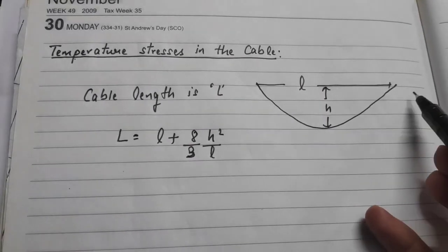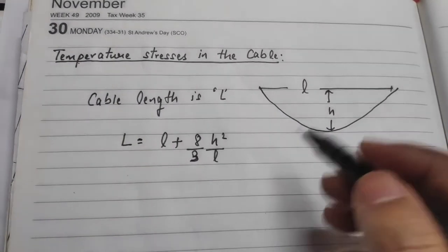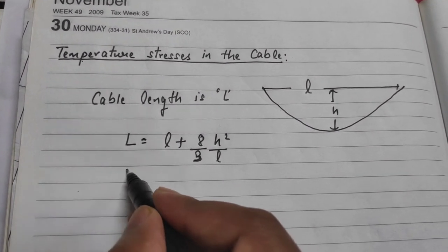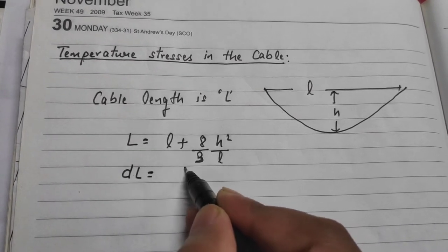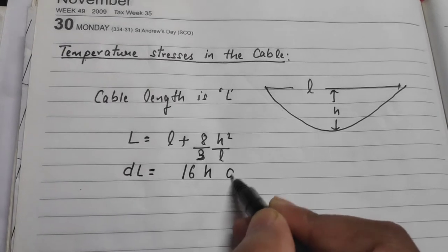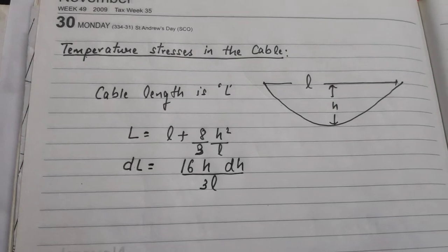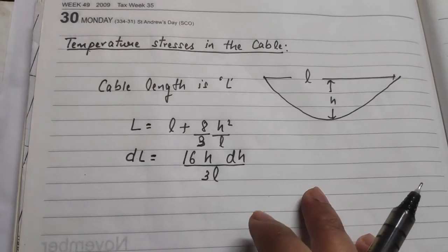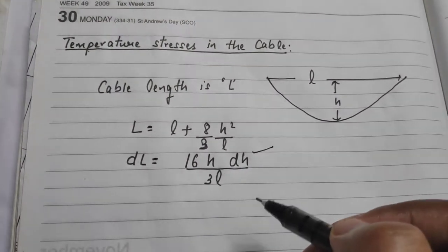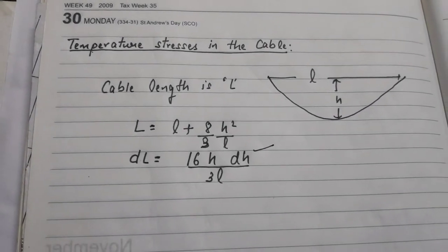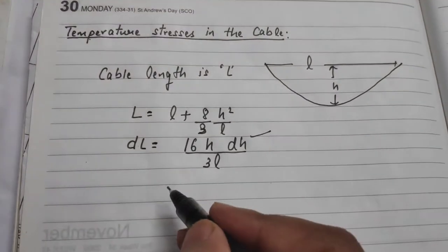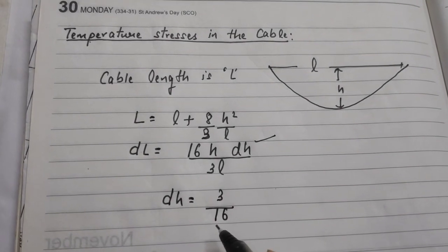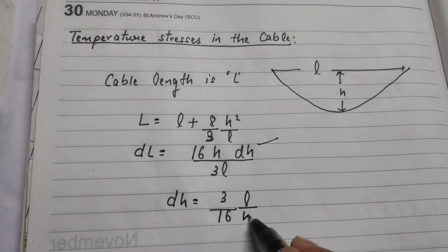When we increase the temperature, the length increases. By increasing temperature we get dL equals 16H·dH divided by 3L. This represents the change in length due to change in horizontal dip. Therefore, dH equals (3/16) × (L/H) × dL.